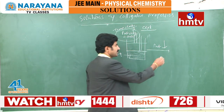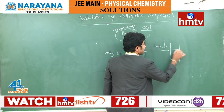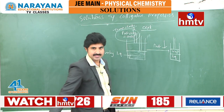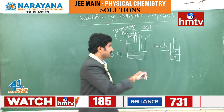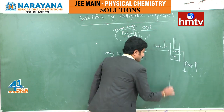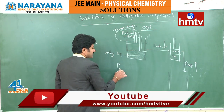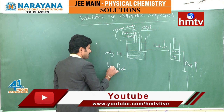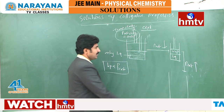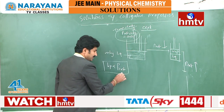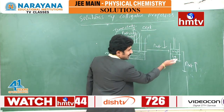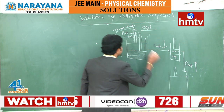Then both liquid phase and some vapor phase will exist. Still, if you decrease the external pressure, we know external pressure and boiling point are directly proportional. So if I am decreasing the external pressure, the boiling point also decreases. By this, the total liquid becomes vapor at the same temperature — I am not changing the temperature. At the same temperature, the total liquid becomes vapor, and then only the vapor phase remains.